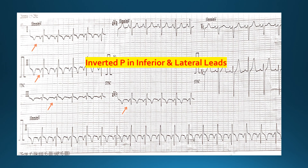Look at the P waves in the inferior and lateral leads as well. We can see, as shown by the moving arrows, that these P waves are inverted. These are the same leads in which we are seeing the other findings of the Q waves, ST elevation, and T wave inversions. These inferior and lateral leads are definitely those involved in myocardial infarction.